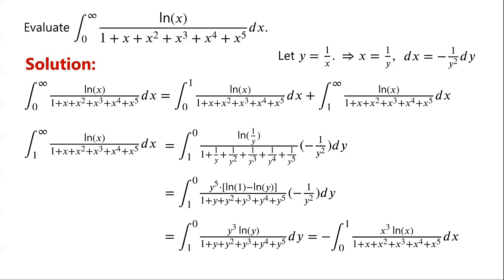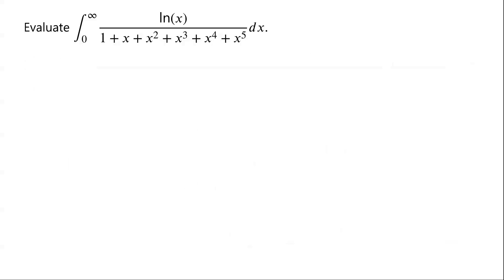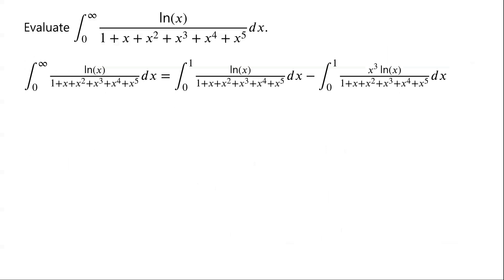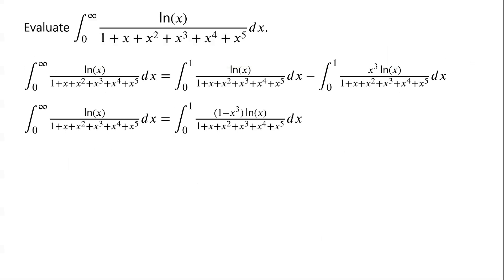So the original integral from 0 to infinity is converted to the difference of two integrals from 0 to 1. By the difference rule, the integral can now be written as the integral from 0 to 1 of (1 minus x³) times ln(x) over 1 plus x plus x² plus x³ plus x⁴ plus x⁵, dx.